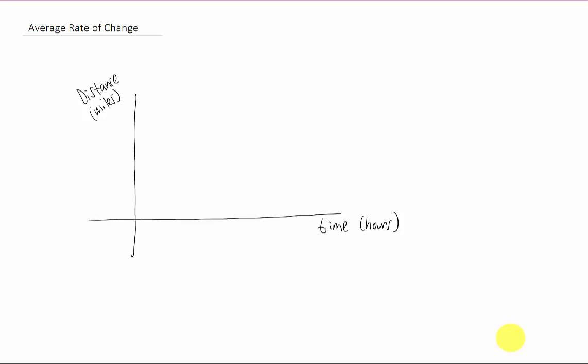Alright, we have an x-y axis set up here. On the horizontal axis is time measured in hours. On the vertical axis is distance measured in miles.